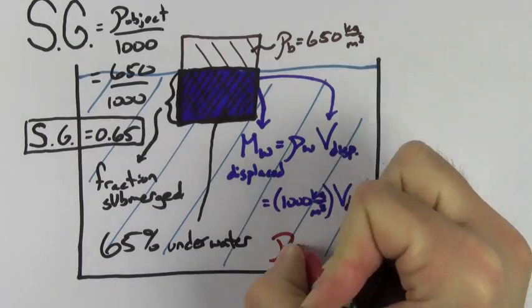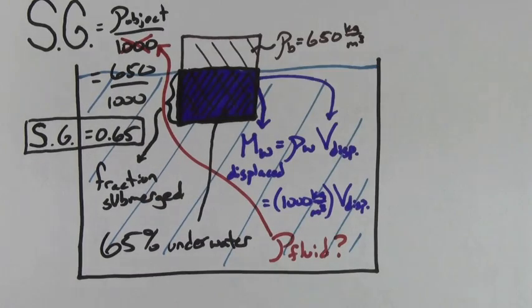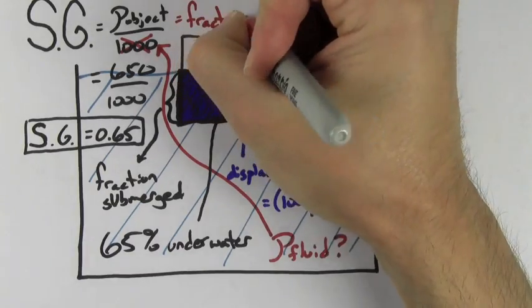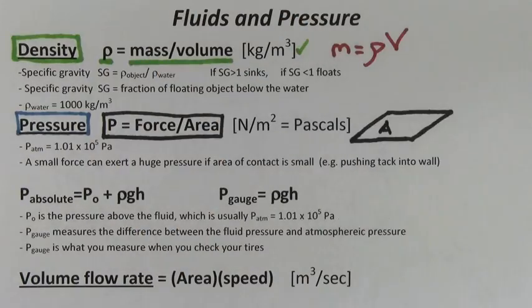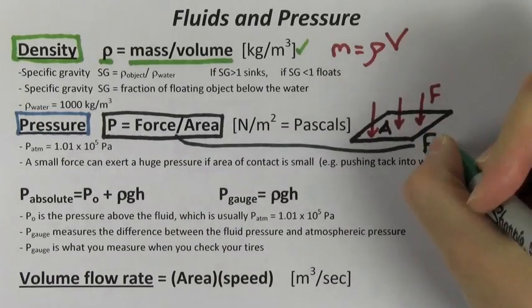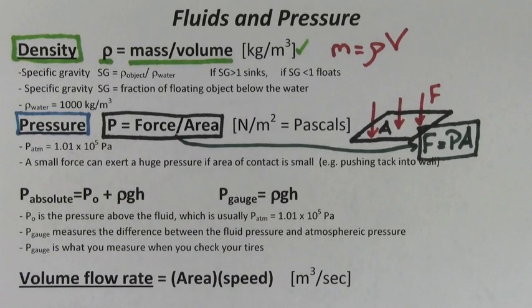You can find the fraction submerged of this object in a new fluid. Just replace the 1,000 with the density of the new fluid. We wouldn't call it specific gravity, but it still gives you the fraction submerged. Pressure is defined to be the force per area exerted on a surface. If you know the pressure, you often have to rearrange this formula to find the total force on a surface.